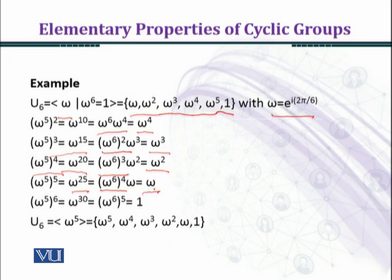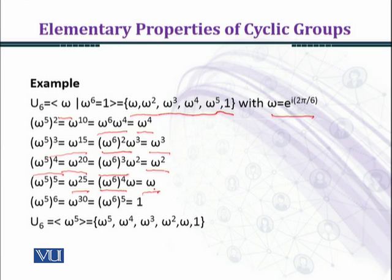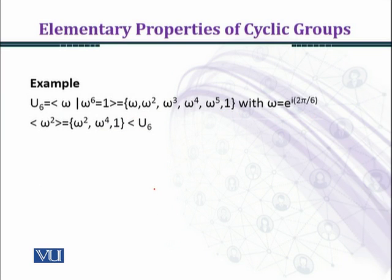Are there other elements that can generate U6? The answer is no. If we take gcd(5, 6) we get one, and gcd(1, 6) is also one. The elements of U6 that can generate it are those whose index has gcd equal to one with six — that is, those relatively prime with six. The gcd(2,6) equals two, gcd(3,6) equals three, and gcd(4,6) equals two, so omega^2, omega^3, and omega^4 cannot completely generate U6.